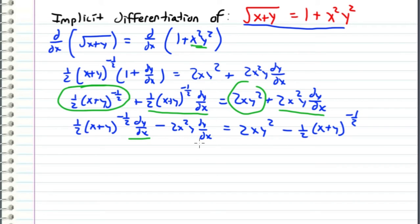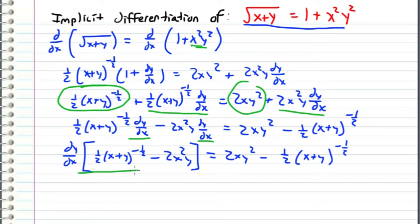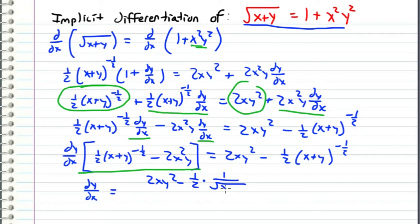Since both terms on the left-hand side have a dy/dx, we can factor it out. When we do that, we get dy/dx times the quantity one-half (x plus y) to the negative one-half minus 2x²y, and this equals the same expression on the right-hand side. Now we just divide both sides by this quantity to isolate dy/dx.